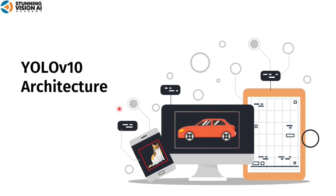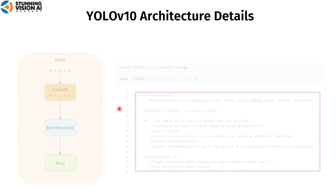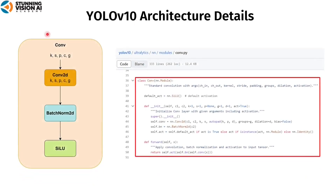Before explaining the whole YOLO V10 architecture, I will explain details of YOLO V10 blocks so that you can understand more easily. The most commonly used block is the convolutional block. This block is based on the Conv class in the conv.py file, which is in the ultralytics end modules folder. A convolutional block consists of a 2D convolutional layer, a 2D batch normalization, and activation function. In YOLO V10, the default activation function is SiLU. They are all fused together into a single convolutional block.